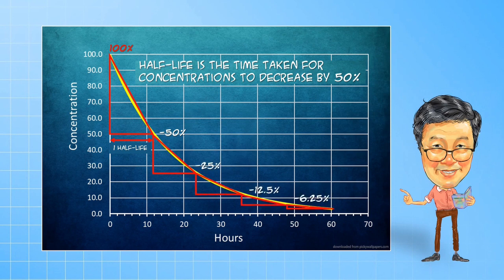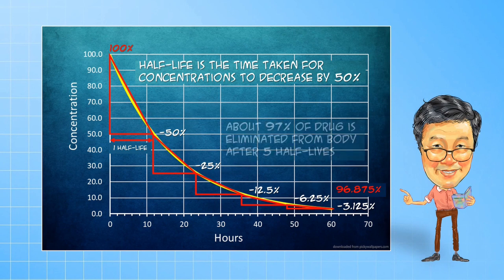Here in this graph, the half-life is 12 hours. You can see that at the end of the first 12 hours, the concentrations have fallen by 50%. After that, following each 12 hours, the concentrations fall by 25%, 12.5%, 6.25%, and 3.125% respectively, so that at the end of 5 half-lives, concentrations are only about 3.125% of the original concentration.